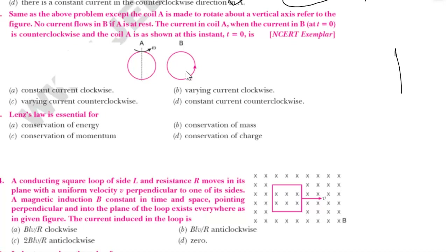Same as the previous question — here current is moving in this direction. The current in coil A, when the current in B is counterclockwise and coil A is as shown in the figure at time T = 0, is what we need to find.